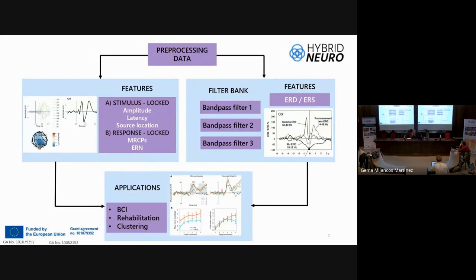Another strategy for analyzing these potentials is filter bands, which allow us to observe the signal in different narrow frequency bands in the time domain. For example, signals can be examined in different bandpass filters such as gamma, mu, and beta bands. In this type of analysis there are event-related desynchronization and synchronization. Possible applications include BCI, brain-computer interfaces, rehabilitation, and clustering.